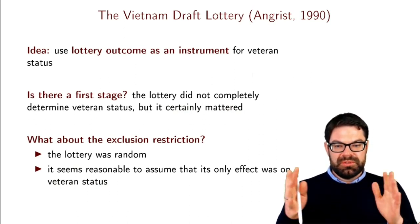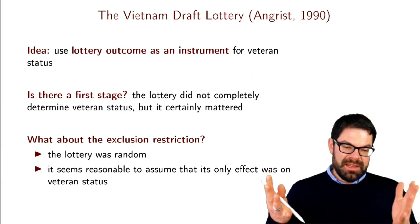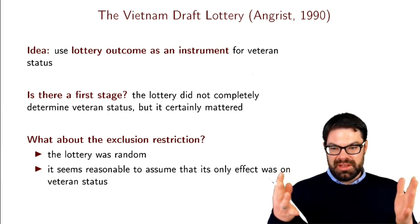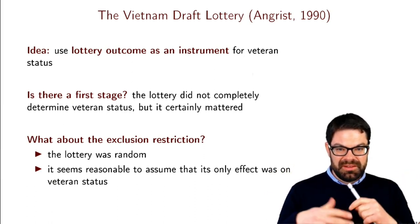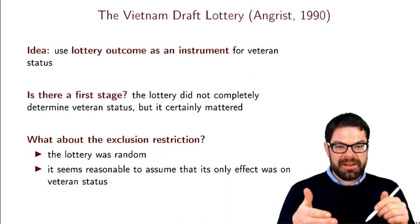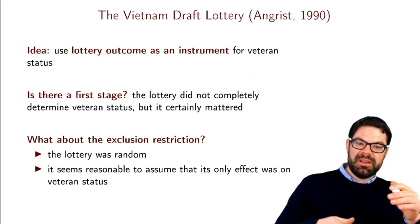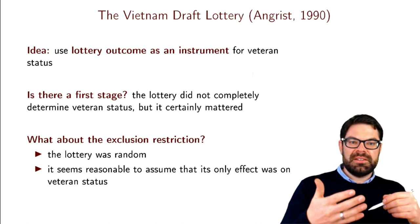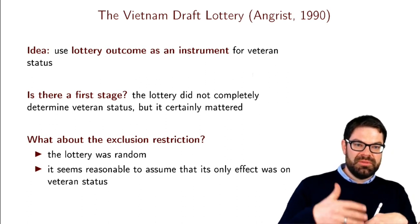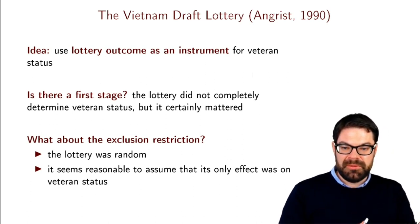So we have an instrument — the lottery number — which is an encouragement to be treated, and the treatment is whether they actually served in Vietnam or not. Even those not encouraged by the instrument could still serve. The question in the first stage is whether those encouraged were more likely to serve than others. The lower your lottery number, the greater the likelihood that you actually had to serve in Vietnam.